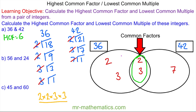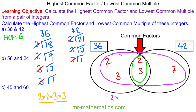The lowest common multiple is all the numbers multiplied together: 2 times 3 times 2 times 3 times 7, which equals 252. So 252 is the first number that will appear in both the 36 and 42 times tables.